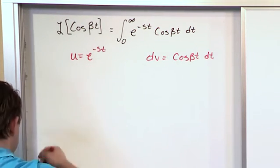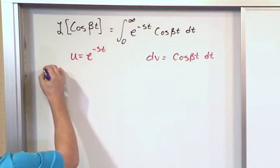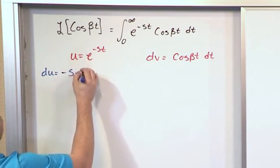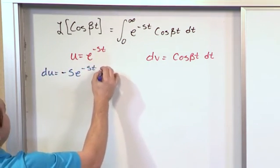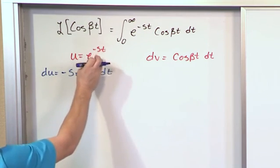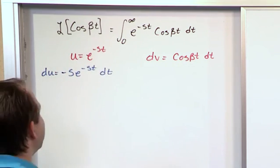So for this, let me write it in blue. For du, what is the derivative of this with respect to time? It's minus s e to the minus st dt, right? Think of it as du dt. This is what you would take the derivative of. The derivative of the exponent comes out, and then here we have an indestructible guy right there.